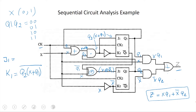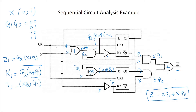To summarize: J1 equals Q2·(X OR Q1), K1 is the inverse of that expression, J2 equals X XOR Q1-bar, and K2 equals X-bar. We also have our output expression Z. Now that we have these expressions, the next step is to create K-maps.